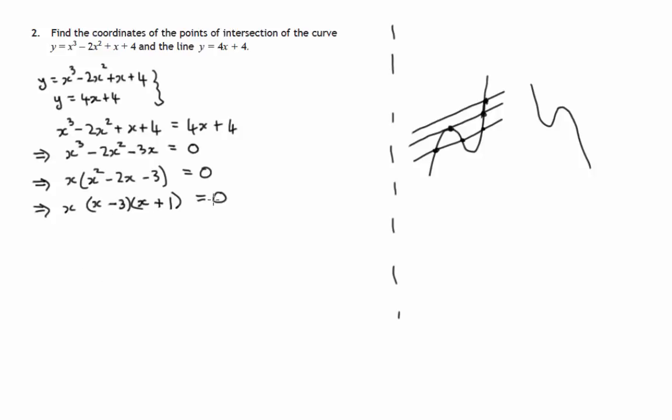So this times this times this is zero. One of these guys must be zero. So either X equals zero or X minus 3 is equal to zero or X plus 1 is equal to zero. If X minus 3 was zero, then X would be three. If X plus 1 is equal to zero, then X would be minus one.